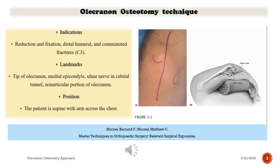Indications: reduction and fixation of distal humeral and comminuted fractures. C3 landmarks include the tip of the olecranon, medial epicondyle, ulnar nerve in the cubital tunnel, and the nonarticular portion of the olecranon.